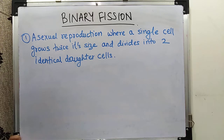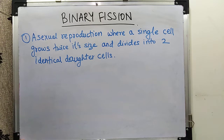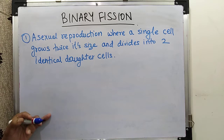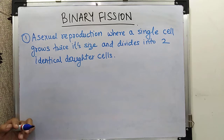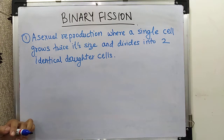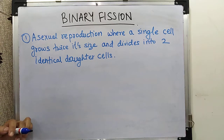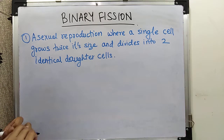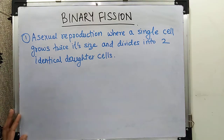Now, which types of organisms perform binary fission? Prokaryotes like bacteria, protists like amoeba and paramecium, and euglena, as well as eukaryotic organelles in our cells like mitochondria and chloroplast. Binary fission takes place by mitosis or amitosis. The requirements for binary fission to take place include a favorable environment where there is a sufficient amount of food.